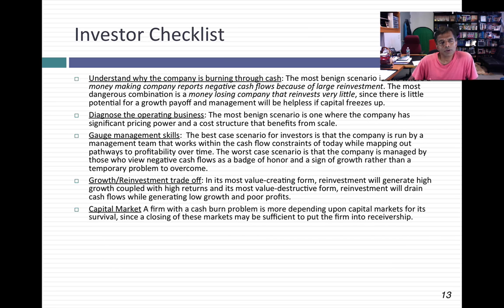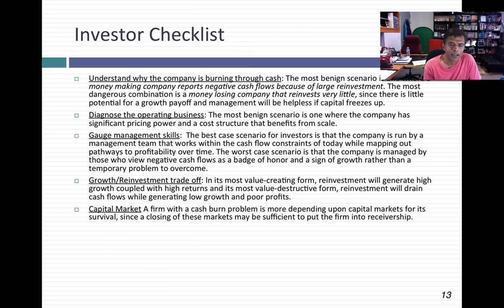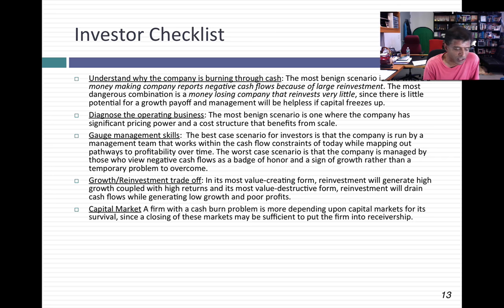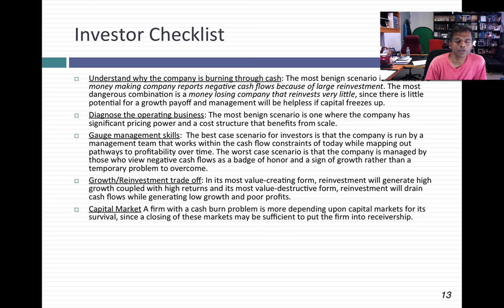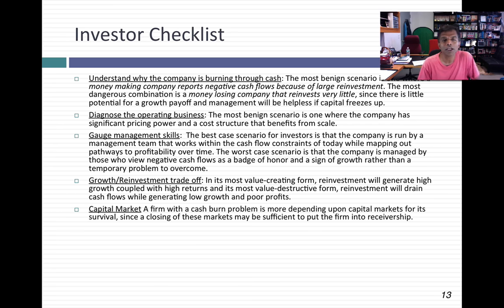Which brings me to: what do you as an investor want to see in a company with cash burn? Here's the checklist. First, understand why the company is burning through cash — it's a combination of losses and reinvestment that drives cash flows. Your best case scenario is actually a company that's making money but has cash burn because it's reinvesting huge amounts. Why is this the best case? Because your operating business is already showing promise as a profitable business. The reinvestment is discretionary and comes with a payoff — higher growth. And the discretionary part helps you: if capital markets shut down, you can still survive. Your most malignant scenario is a company with negative cash flows because it's losing tons on its operations, selling stuff at below cost, not reinvesting very much, no growth payoff, and if capital markets shut down, this company will have to shut down as well.